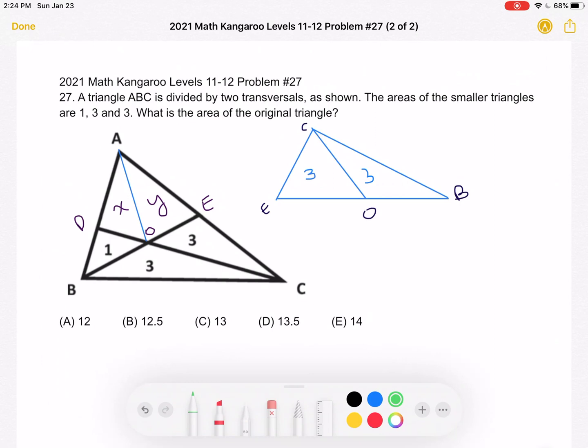So to start, I've labeled some more of the points, namely D, O, and E on the image as given to us on the test. And then I have connected vertex A to the center O where all the transversals meet.